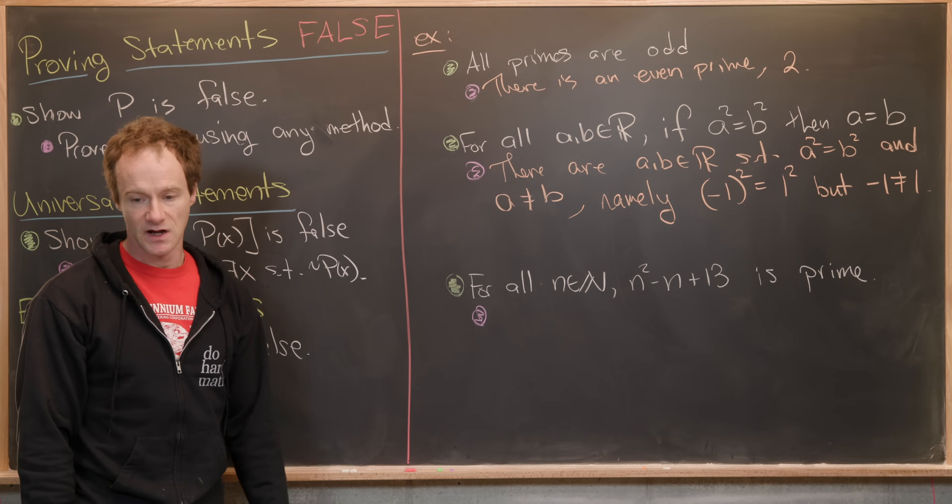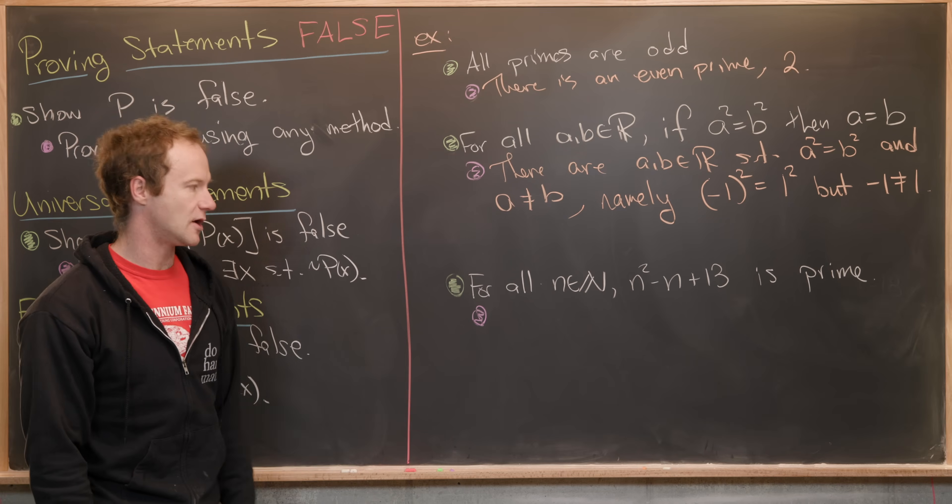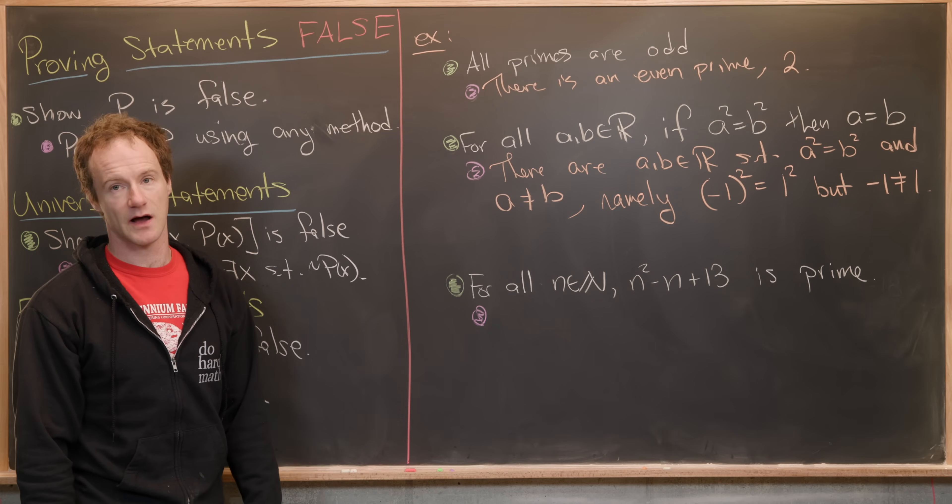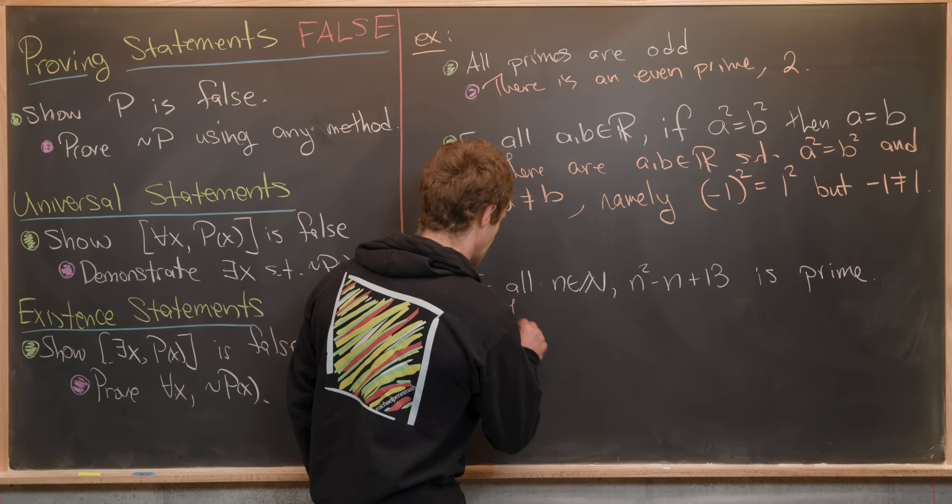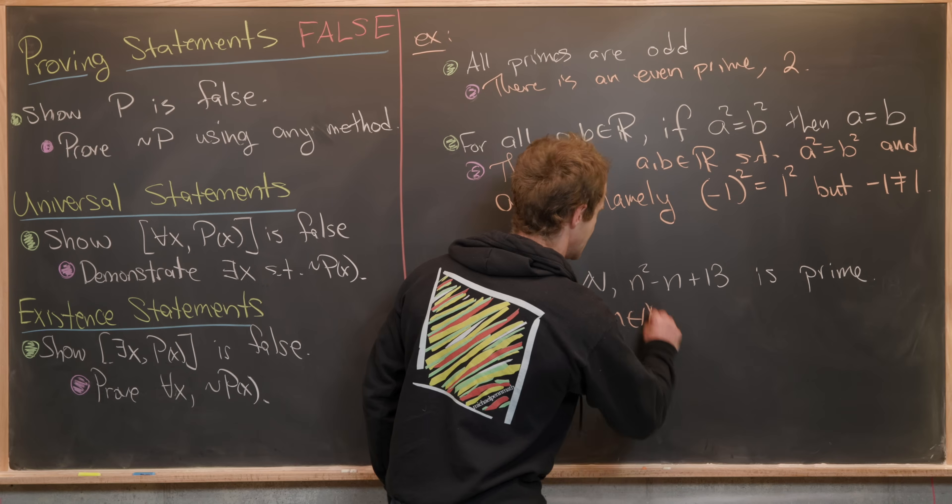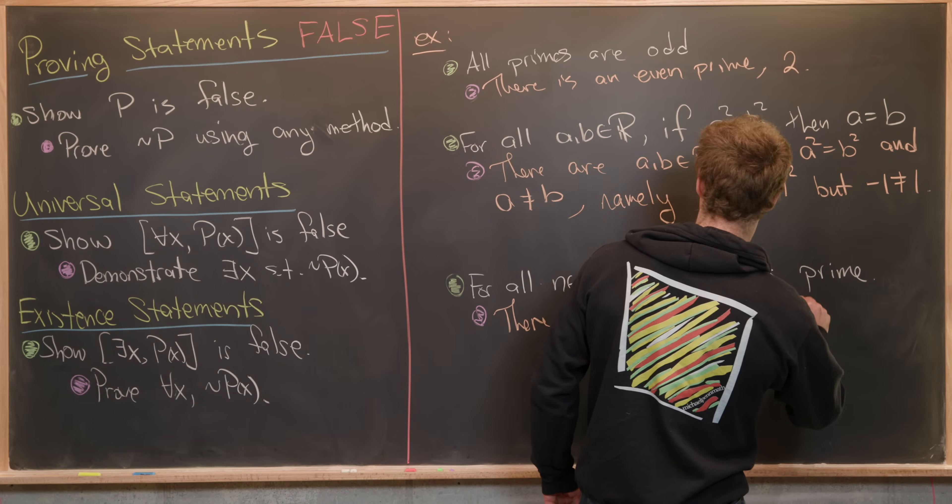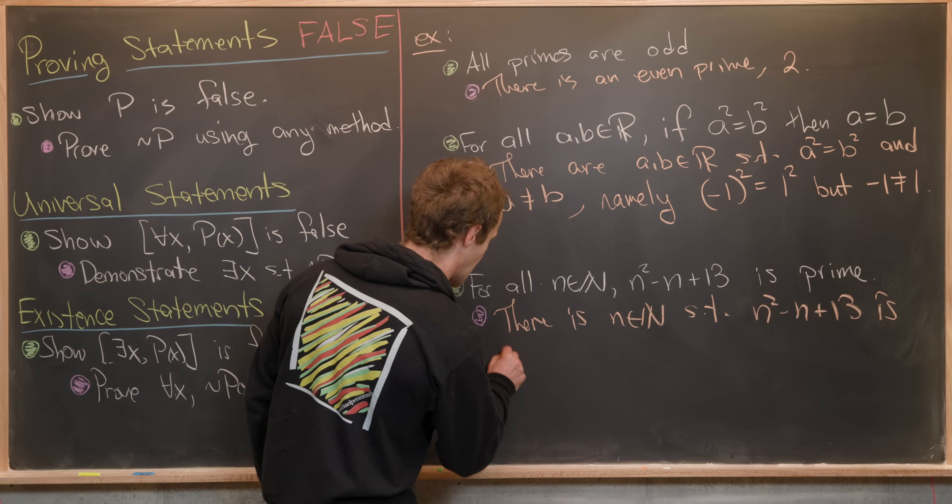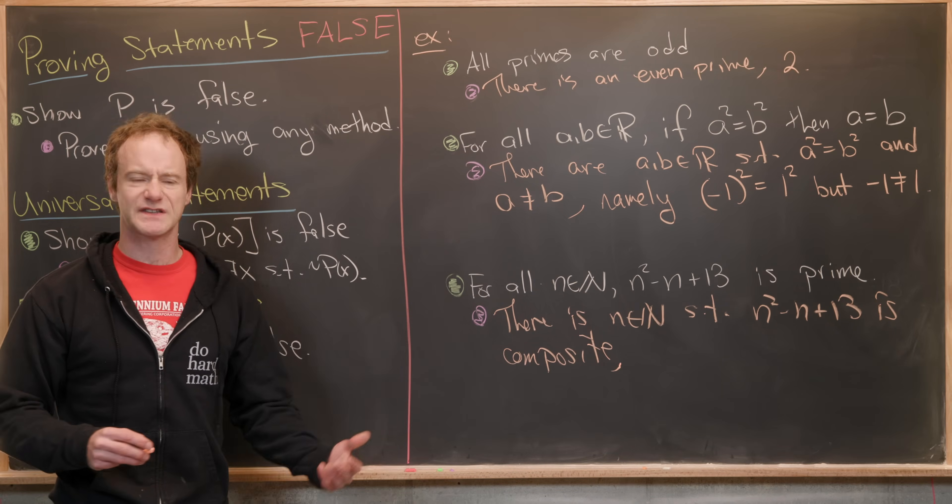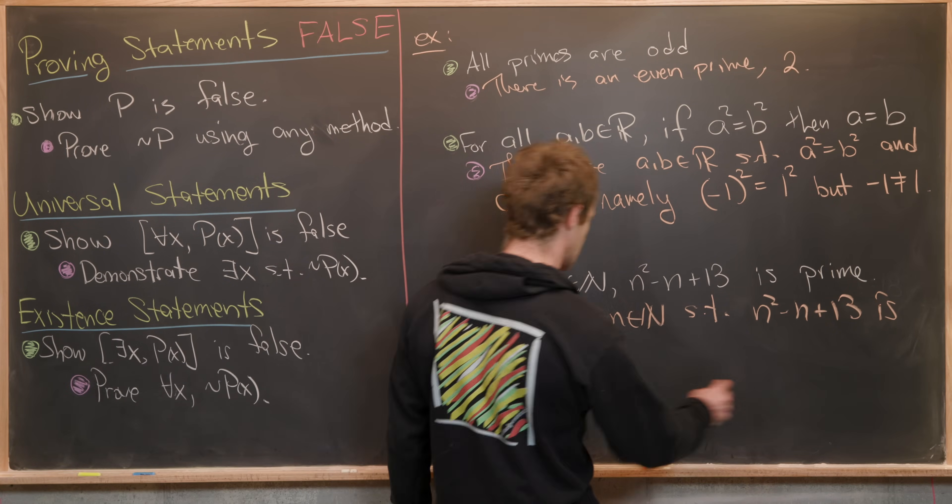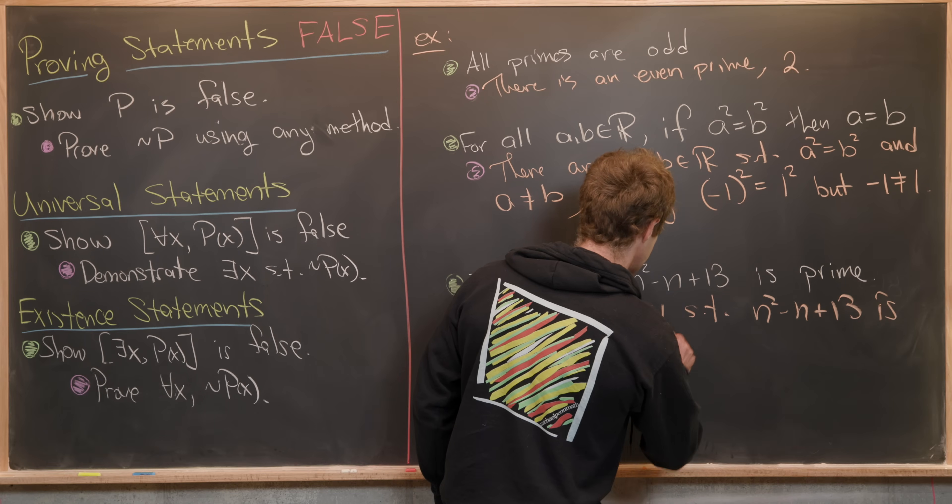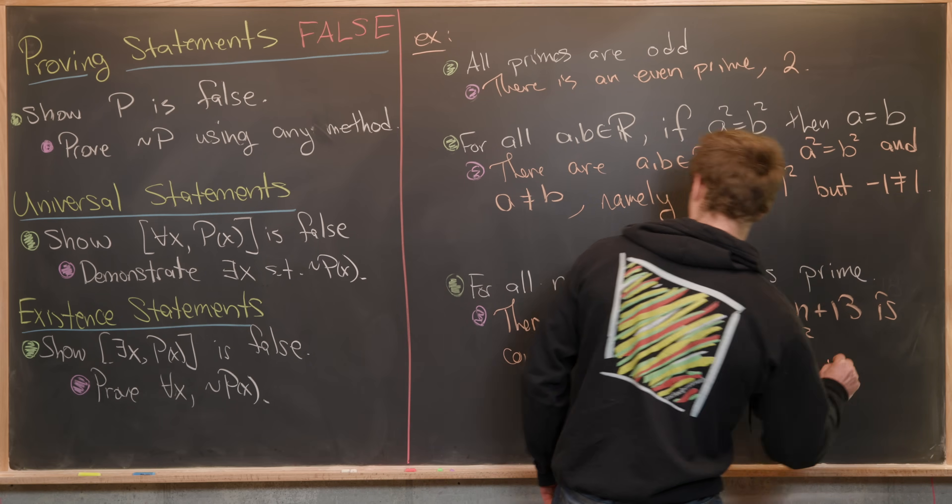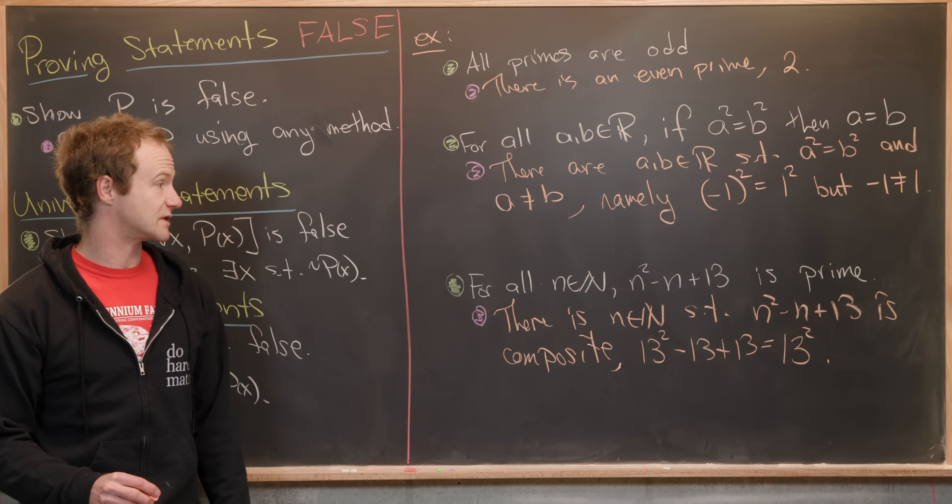Let's look at this last universal statement. For all natural numbers N, N squared minus N plus 13 is prime. Let's negate that. There is a natural number N such that N squared minus N plus 13 is not prime, meaning composite. Then maybe we could finish this off with the counterexample as well. It's not too hard to check that 13 squared minus 13 plus 13 equals 13 squared, which is not prime. It's 13 times 13.